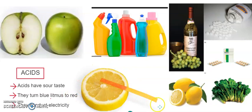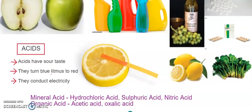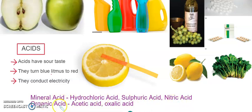Based on their source, acids are divided into two categories: mineral acids and organic acids. Mineral acids are those produced synthetically — made in the lab or man-made. These include hydrochloric acid, sulphuric acid, and nitric acid.